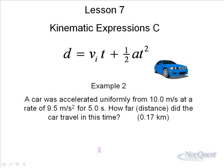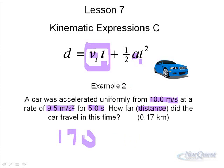A car was accelerated uniformly from 10 m/s (initial velocity) at a rate of 9.5 m/s² (acceleration) for five seconds. How far? What was the distance? We're looking for d. I gave you a nice easy one here because I gave you the initial velocity, the time, and the acceleration. In this case, there is an initial velocity, so this term must also be included. 10 × 5 is 50, and then ½ × 9.5 × 5², whatever that works out to be. It should work out to be about 170 meters.